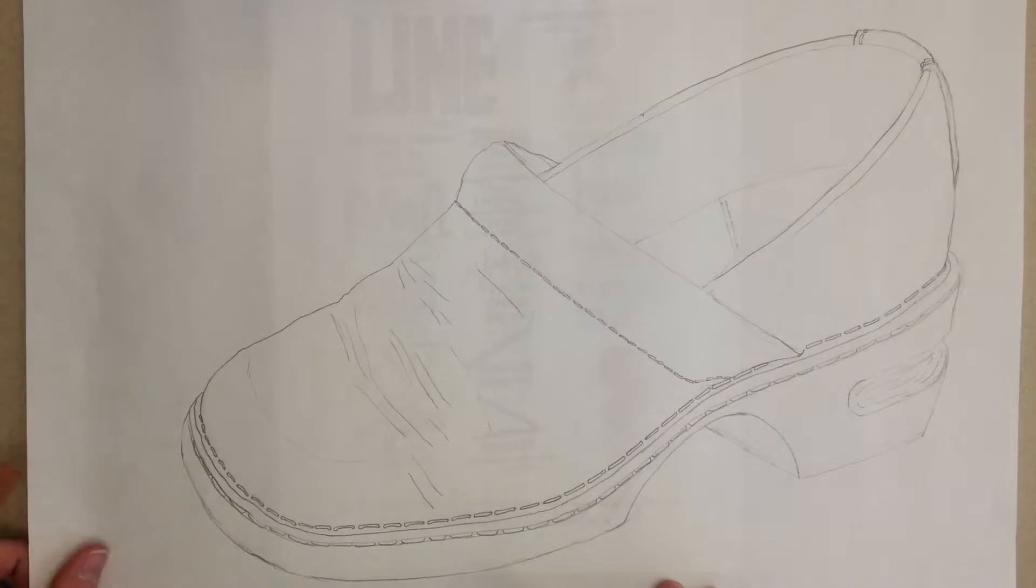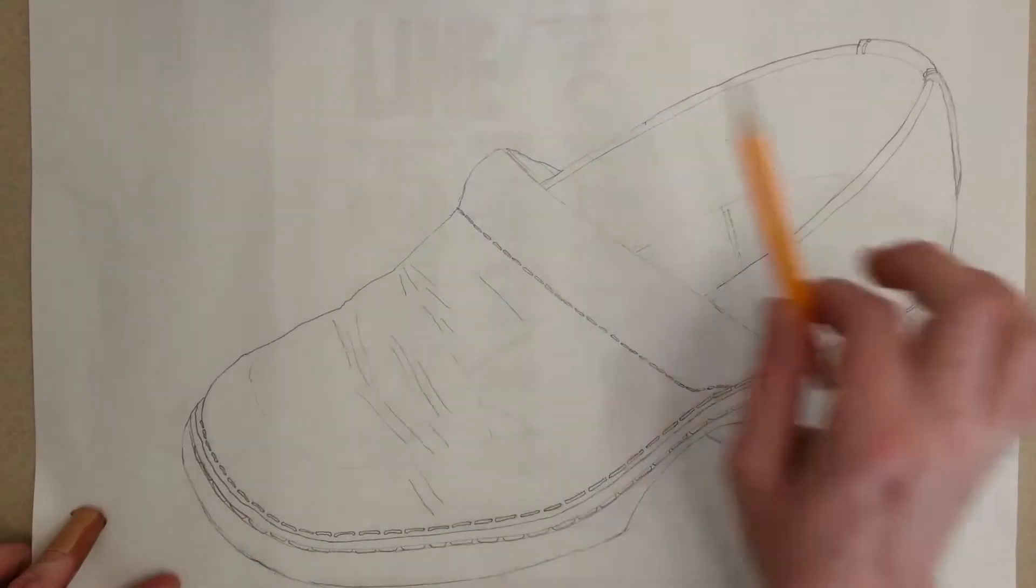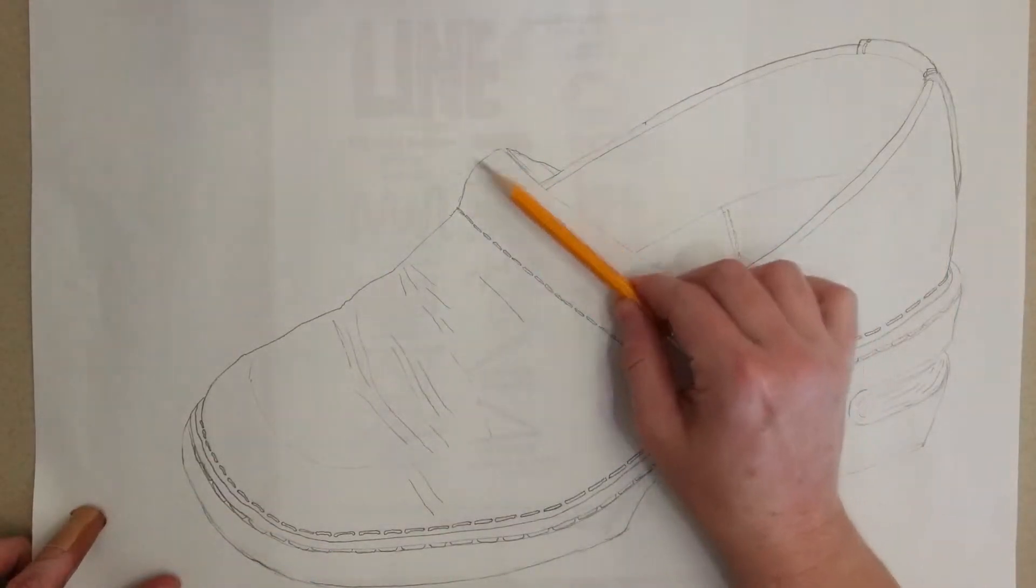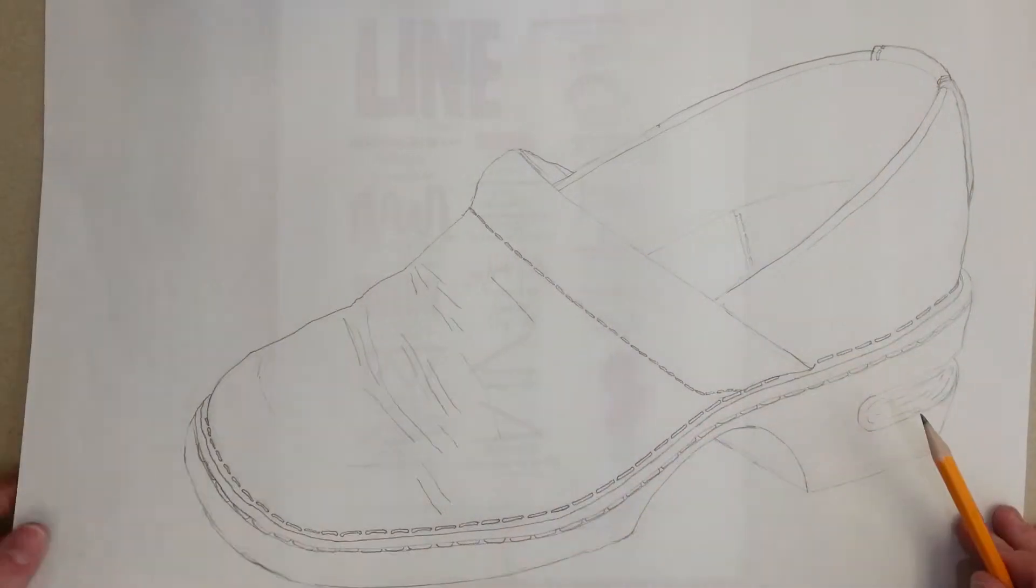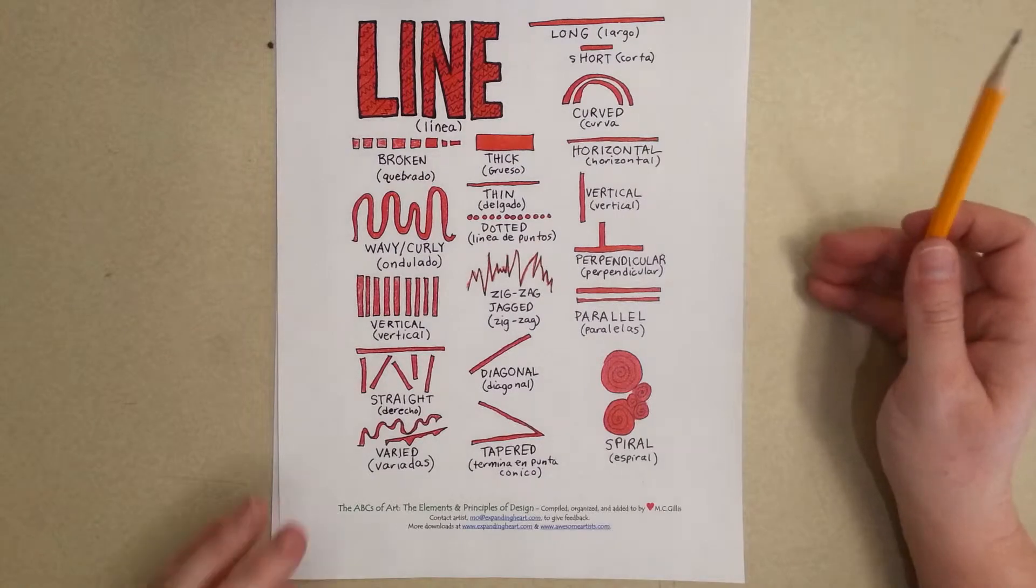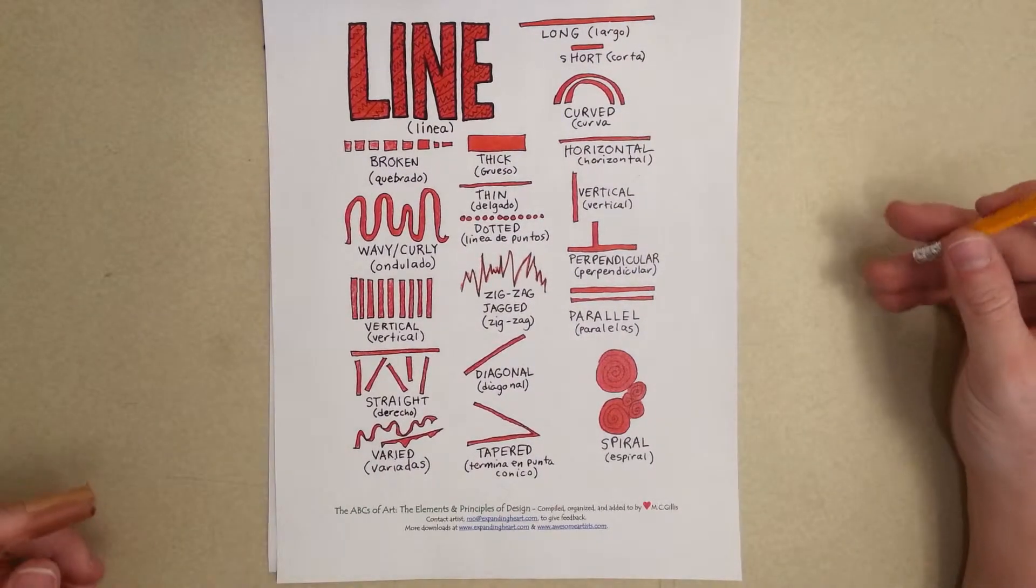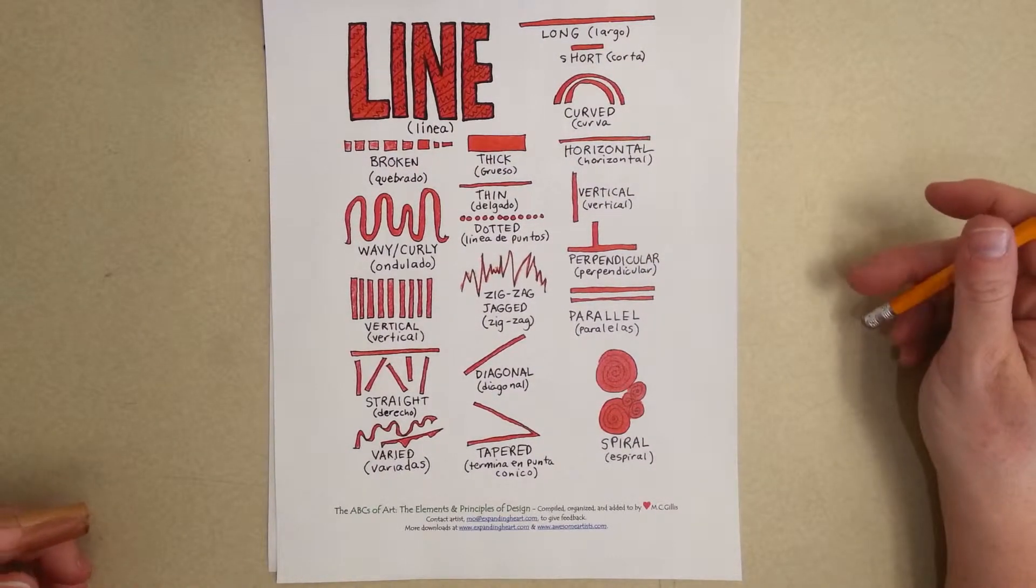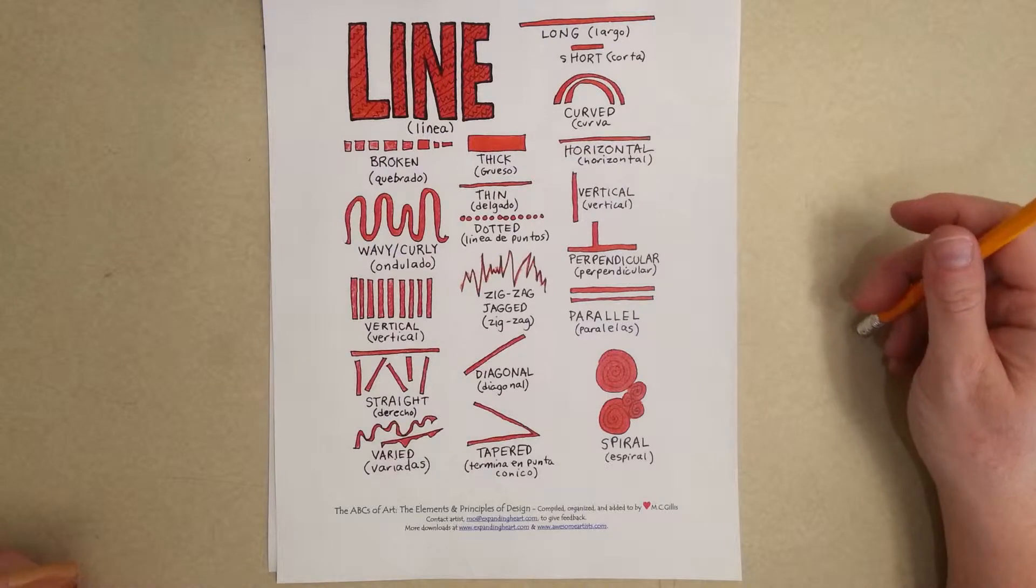What we're going to talk about today is adding to this project. We have a contour line drawing here, and then what we're going to do is learn a little bit more about line and different ways to make lines.